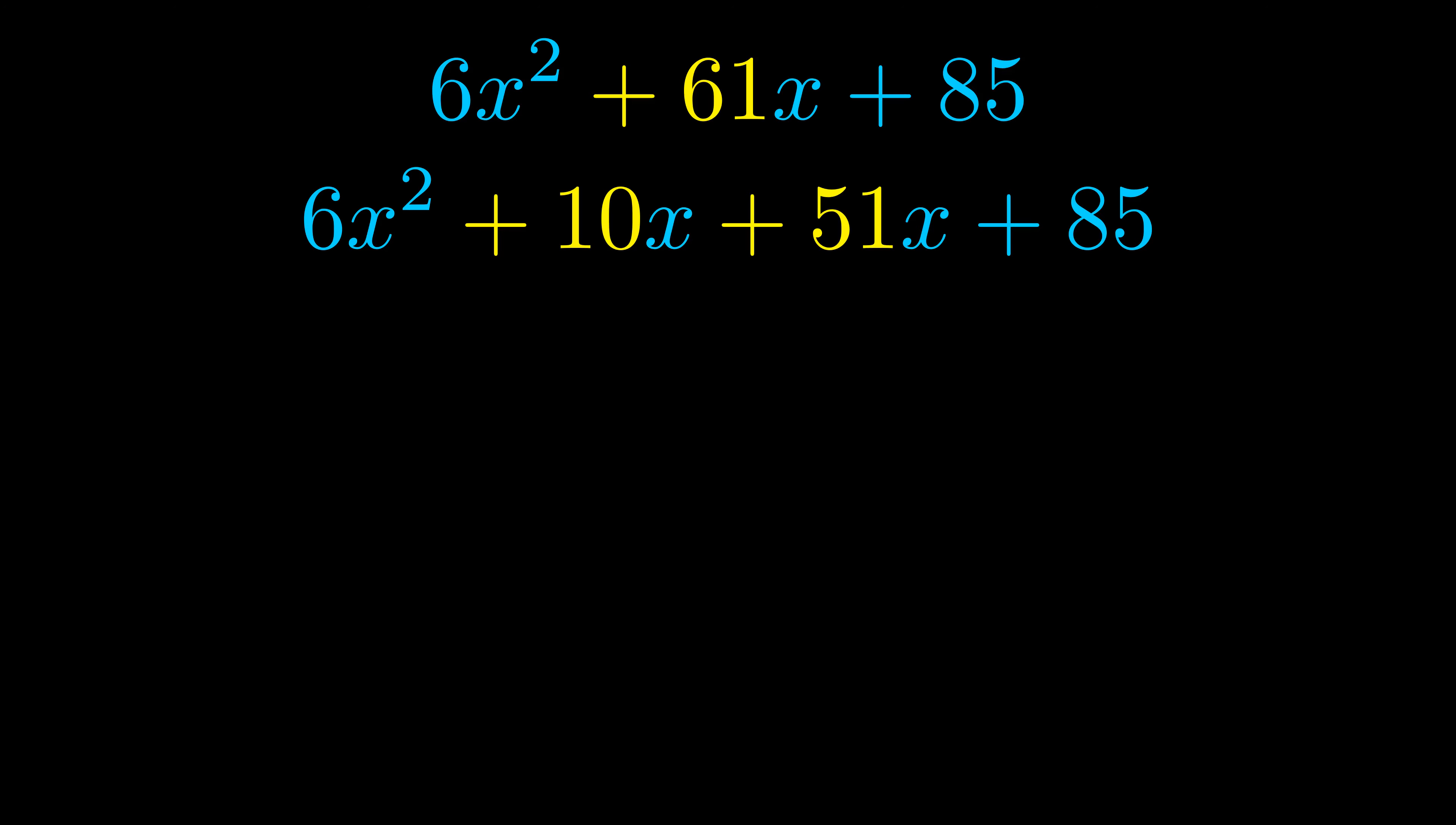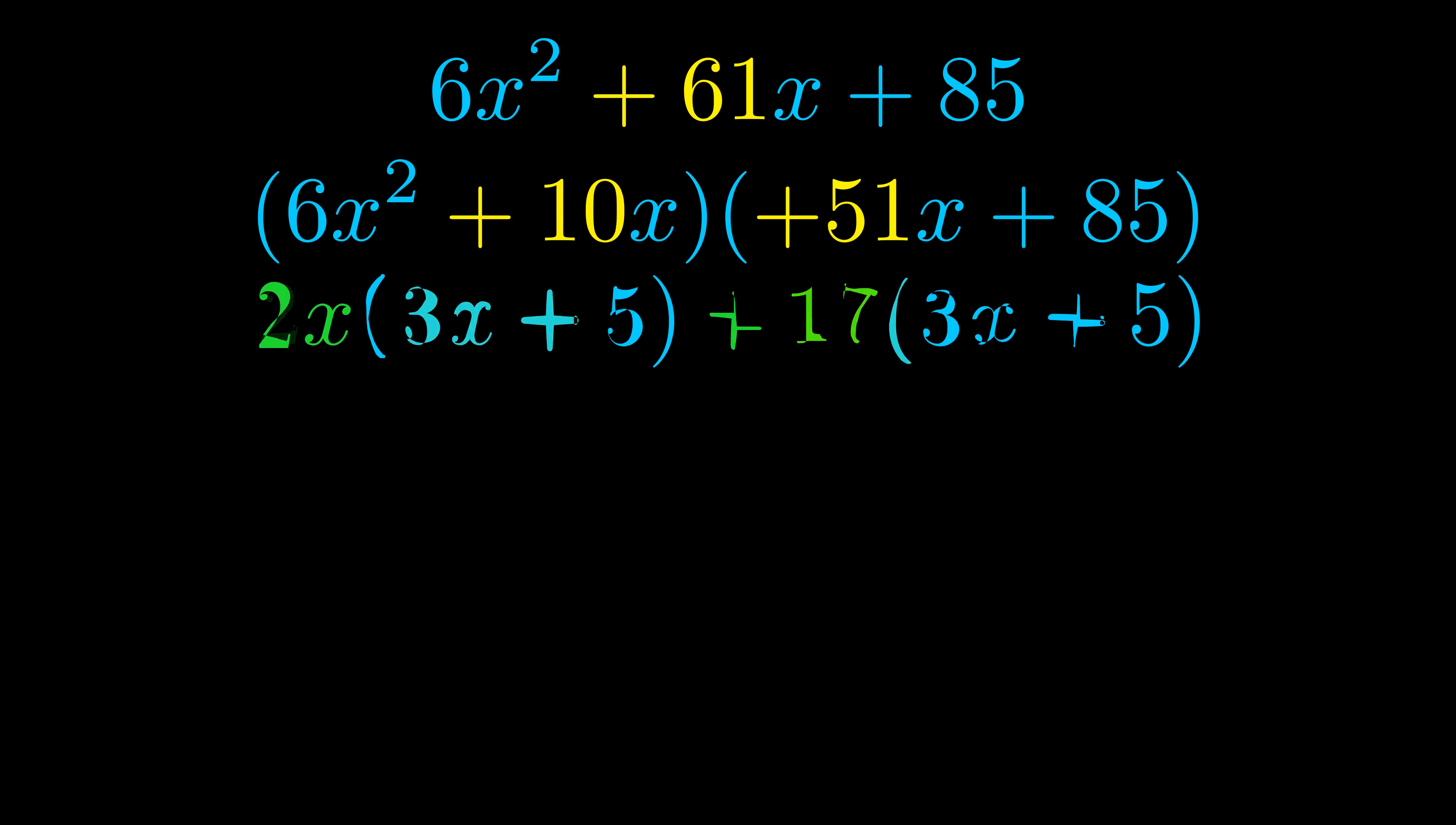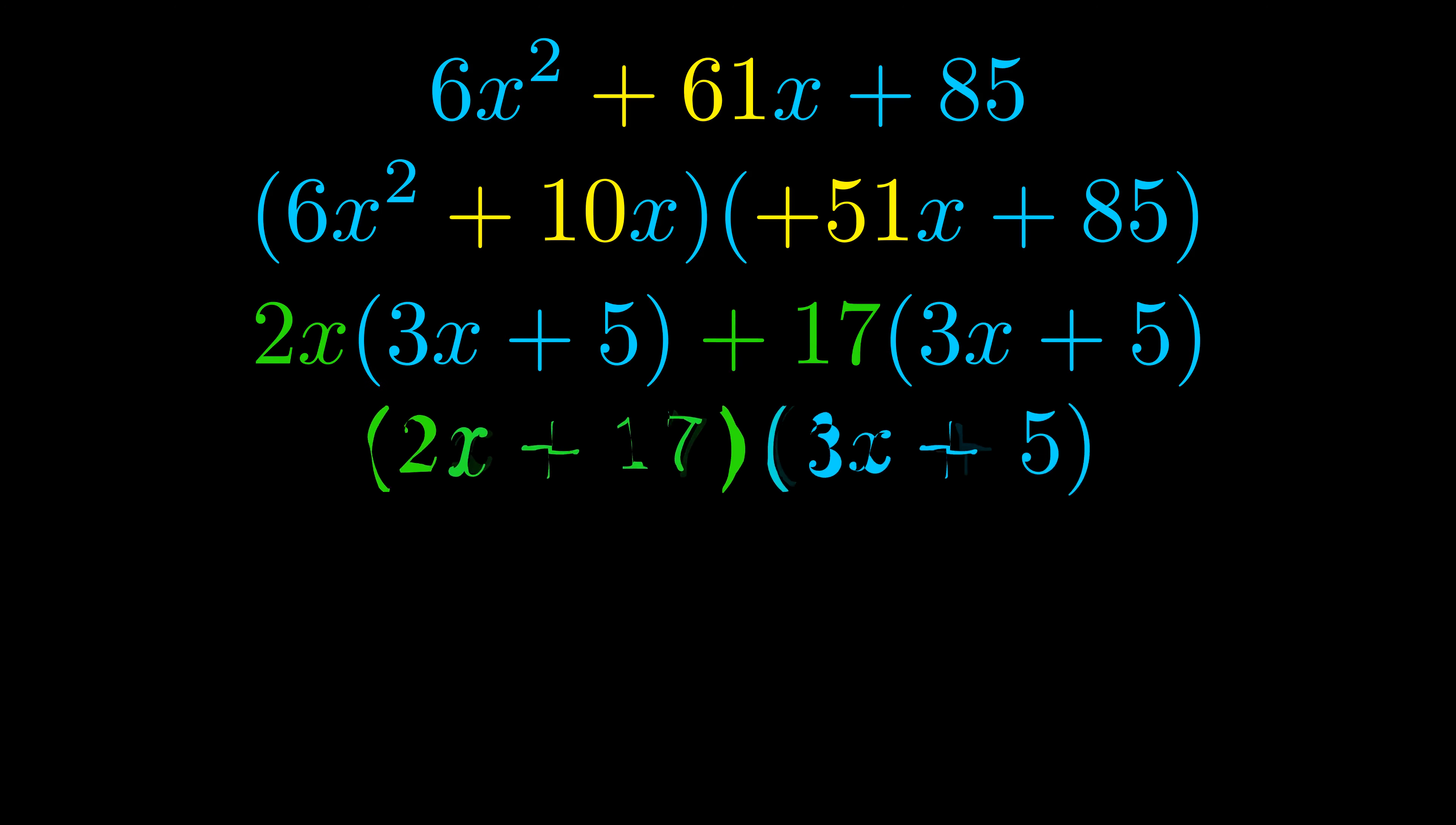Once we've done this we go ahead and put parentheses around the first term and the last term so that we can take the greatest common factor out of both terms. We can see the greatest common factor is now outside in green. Notice also how what remains inside of the parentheses is the same in both cases. The blue values are the same.